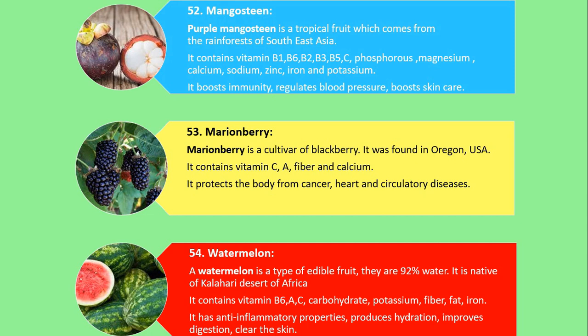Number 53. Marionberry. Marionberry is a cultivar of blackberry. It was found in Oregon, USA. It contains vitamin C, A, fiber and calcium. It protects the body from cancer, heart and circulatory diseases.